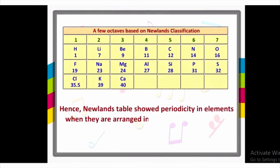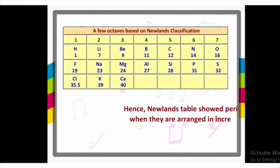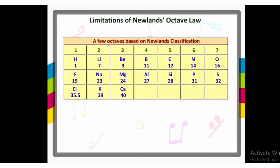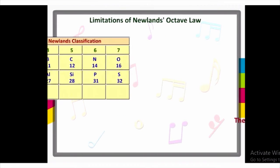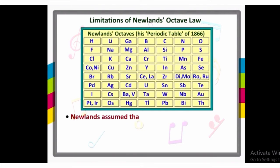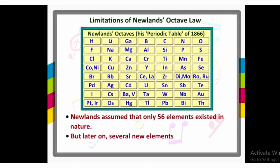However, the law has some limitations. It was applicable only up to calcium. Newlands assumed that only 56 elements existed in nature and that no more elements would be discovered in the future. But later on, several new elements were discovered whose properties did not fit into the Law of Octaves.